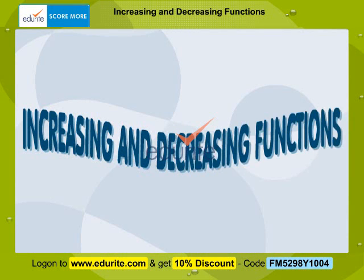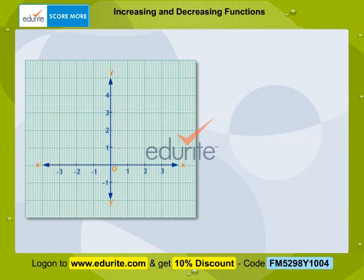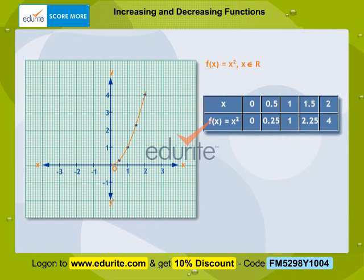Increasing and decreasing functions. Consider the graph of the function given by f(x) = x² for x belonging to the set of real numbers. Looking at the graph to the right of the origin, as the value of x increases, the value of y increases. The height of the graph continuously increases. The function is increasing for the real numbers x greater than zero.